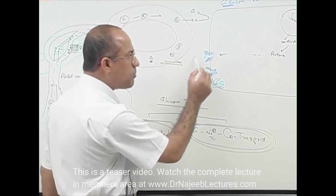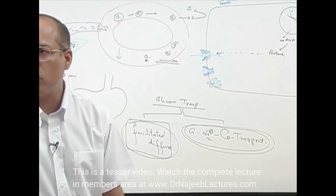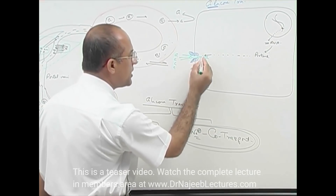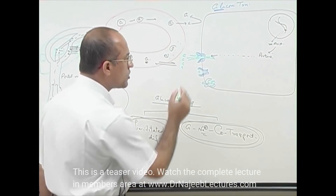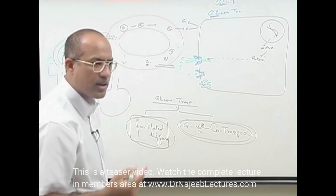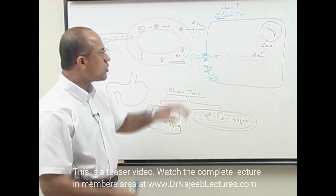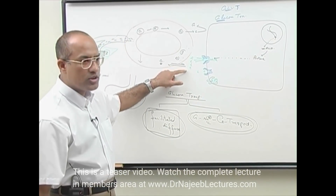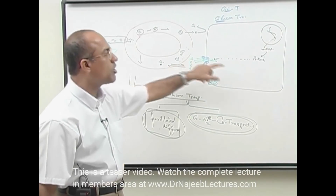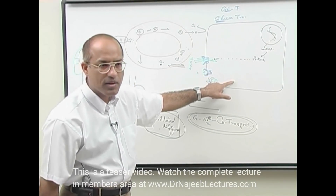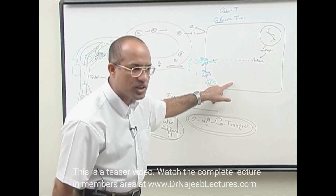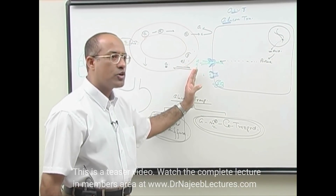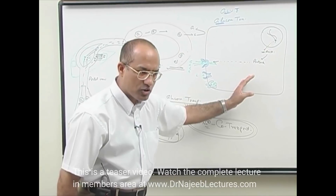But how much glucose will pass through depends on the concentration difference of glucose. If glucose concentration outside is very high, more glucose will be going in. If glucose concentration is very low, less glucose will be going in. So basically, glucose is moving from high concentration to low concentration. When any molecule moves from high concentration to low concentration, we call it diffusion. Basically, glucose is diffusing from high extracellular concentration to low intracellular concentration.